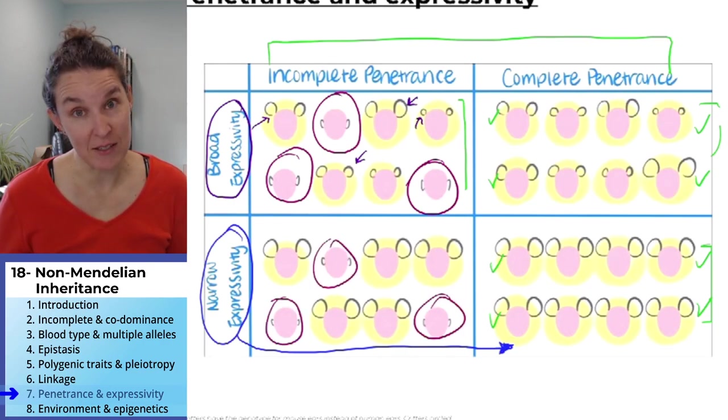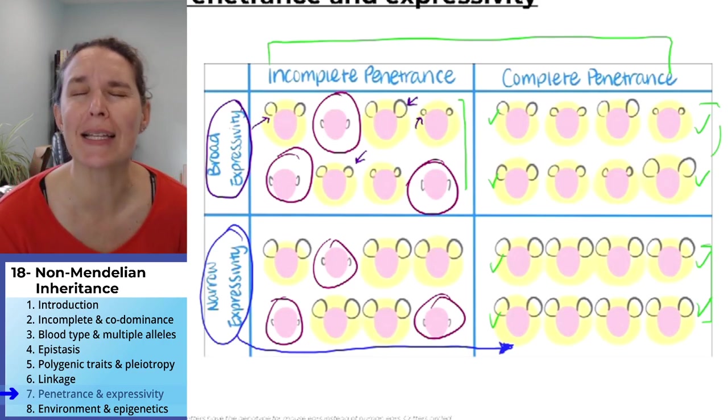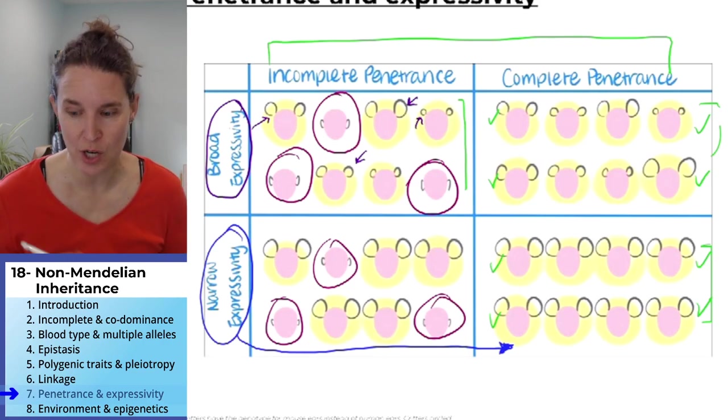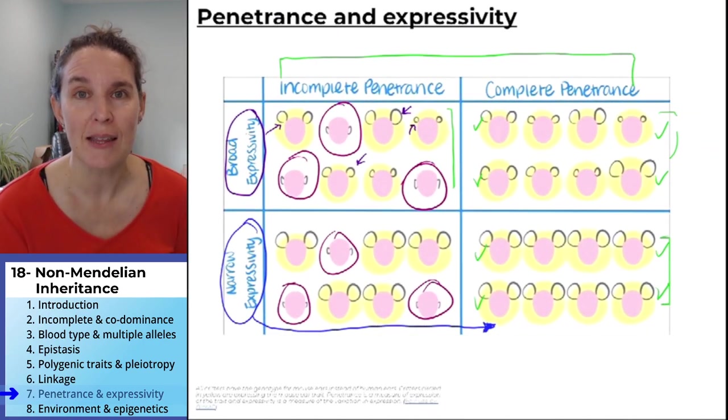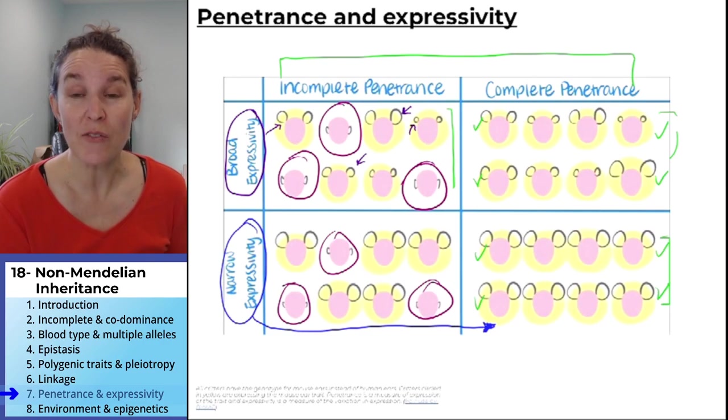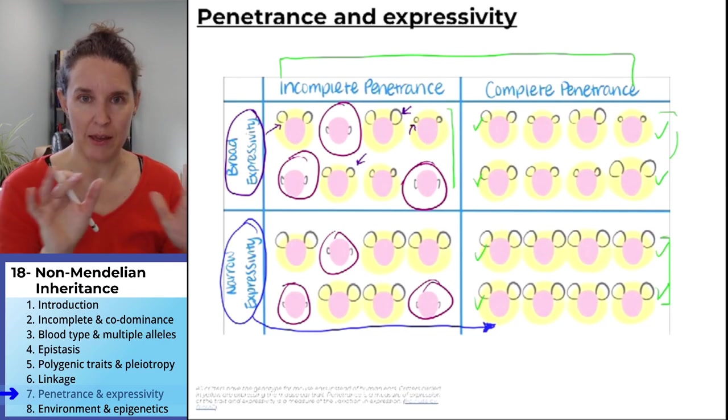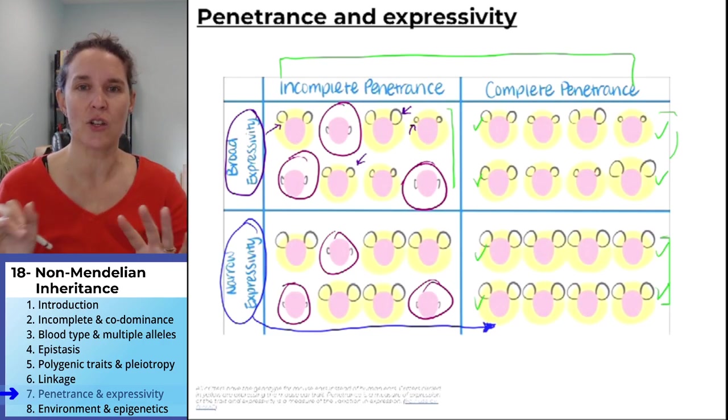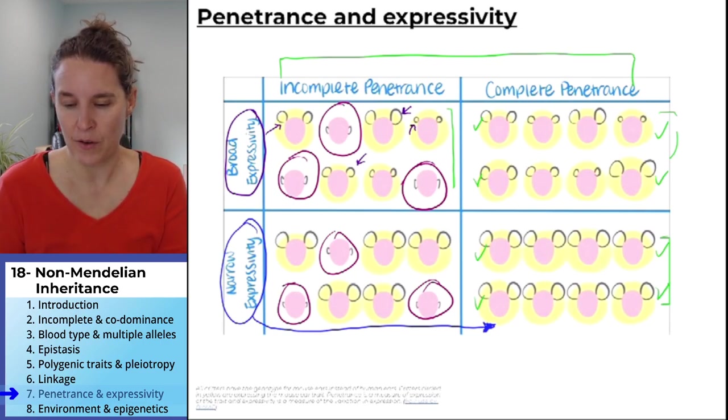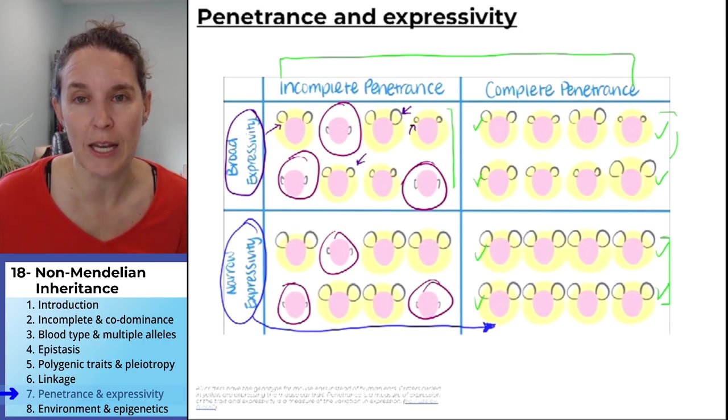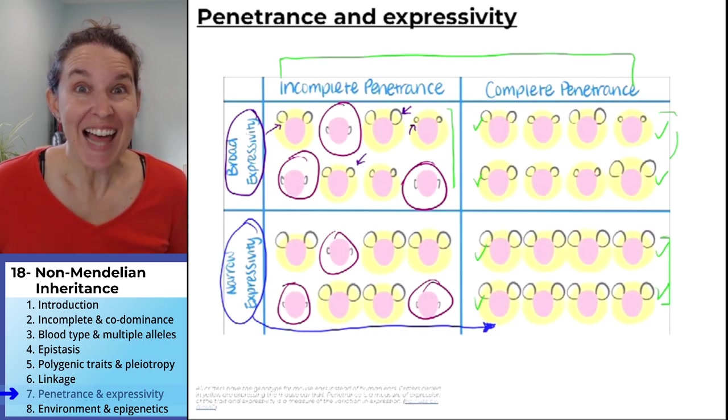If you get the mouse ears with incomplete penetrance, you're all going to look the same because it has narrow expressivity. I really like this chart. We should make our own charts like this to illustrate this concept. Because once you have your chart, you can solve problems with this, answer questions about this, understand the concept. But pulling it out of your head, I think it's super complicated.